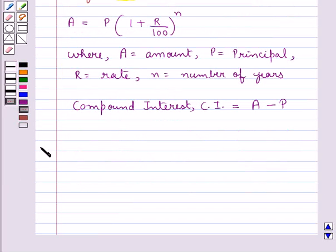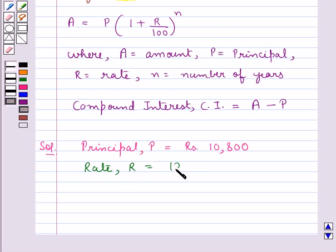Now let's move on to the solution. In the question it's given that principal P is equal to Rs. 10,800. Rate R is equal to 12.5% and that is equal to 25 upon 2%. Time that is N is equal to 3 years.